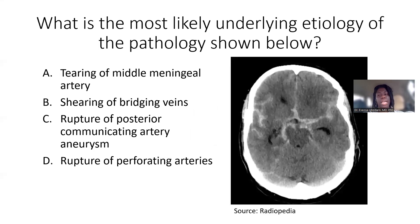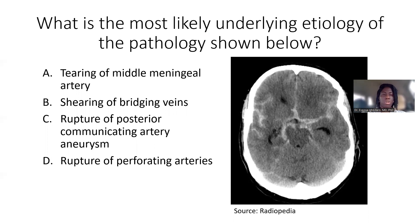With that, here's a board-style question: What is the most likely underlying etiology of the pathology shown below? Your options are: tearing of the middle meningeal artery, shearing of the bridging veins, rupture of the posterior communicating artery aneurysm, or rupture of perforating arteries.